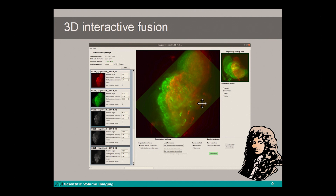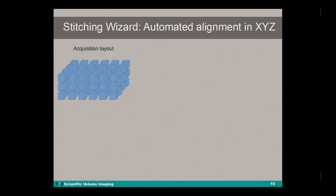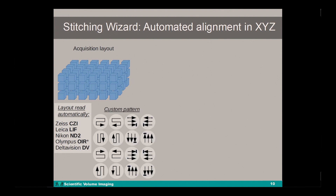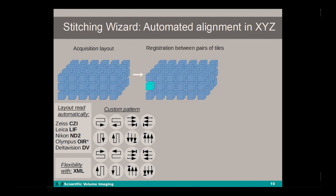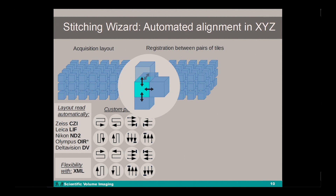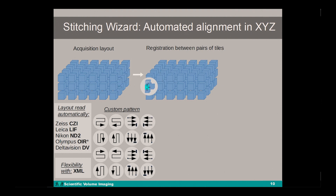At the end of this webinar I would like to show you an example dataset. Upon opening an image with the Huygens Stitcher, the tile layout can either be read from the commercial file formats, be defined with custom patterns in the wizard, or be included as an XML file. The next step in the wizard is the registration, which is done for every tile with respect to its neighbors using a cross-correlation approach. This will then lead to an optimal fit in 3D of all the tiles.